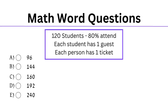So the first thing we need to do is calculate the number of students who attend. We have 80% will attend and 120 students in total. To find 80% of a number, multiply the number by 0.8. The number of attending students is 120 multiplied by 0.8, which equals 96.